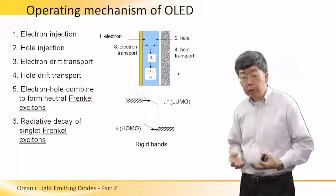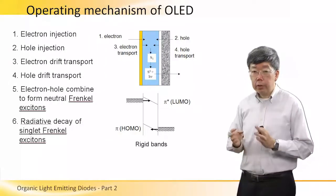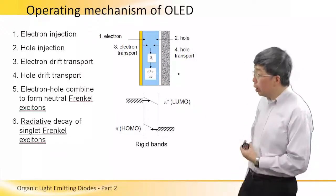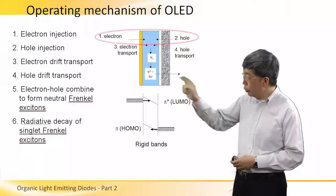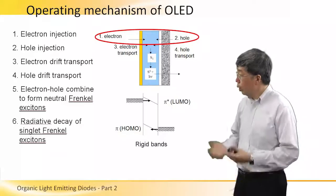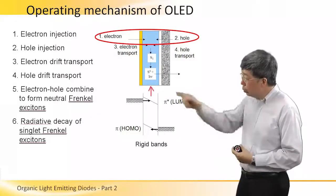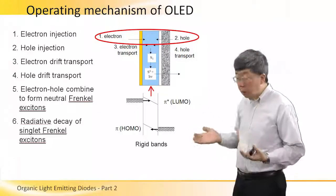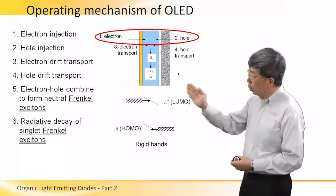They cannot conduct current easily. As a result of that, the first stage in the organic EL process is to bring in the charge carriers into the OLED. This is represented by 1 and 2 in the schematic diagram on the top right. We can introduce or inject electrons and holes into the blue organic layer by applying a voltage bias of the right polarity — injecting electrons from the cathode and holes from the anode.